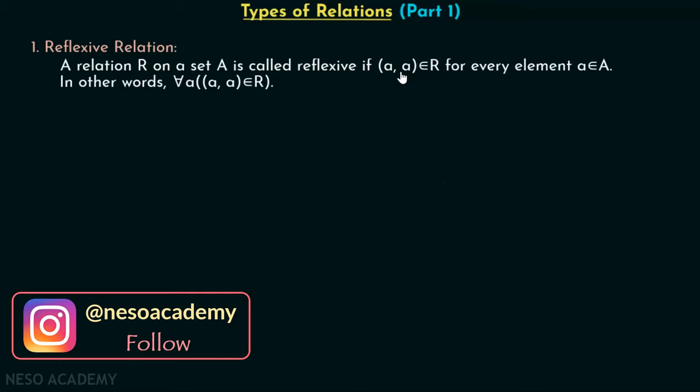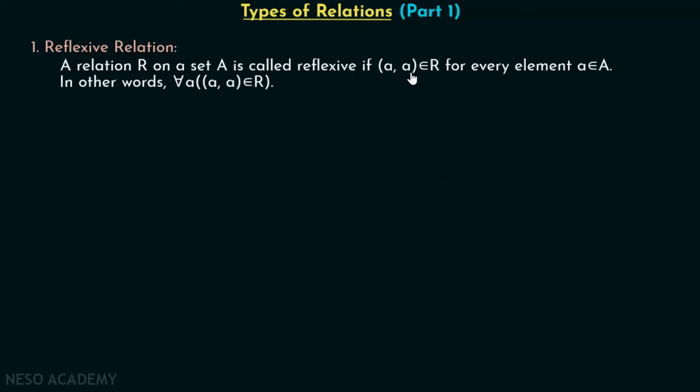A relation R on a set A is called reflexive if (A, A) belongs to R for every element A belonging to A. We are talking about relation R on a set A. A relation R on a set A is called reflexive if this ordered pair — where the first element is equal to the second element — belongs to R for every element A belonging to set A.